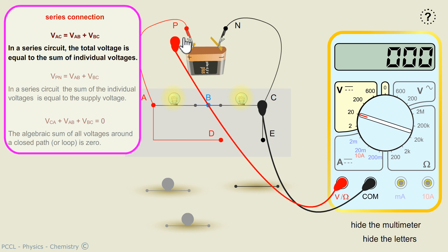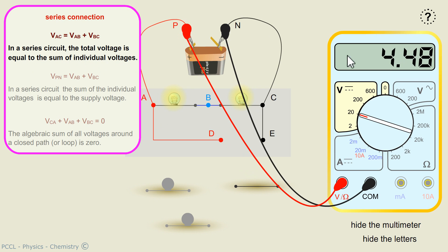VAC equals VPN. Because here the total voltage is equal to the supply voltage. You can write: In a series circuit, the sum of the individual voltages is equal to the supply voltage.